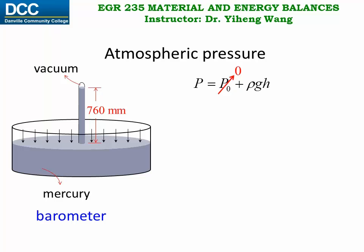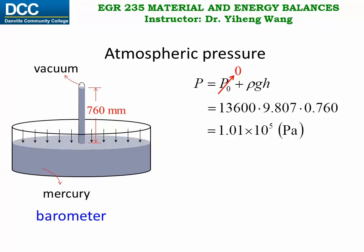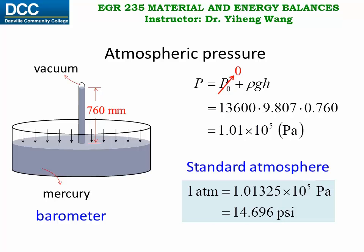We have rho·g·h, and we substitute the values for the density of mercury, gravitational acceleration constant, and the height of mercury, all in SI coherent units, and get 1.01 times 10 to the 5th power Pascal. This is the atmospheric pressure. For standard atmosphere, one atmosphere is a unit for pressure, and that equals 1.01325 times 10 to the 5th Pascal, or 14.696 psi.